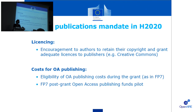Concerning licensing, the Commission encourages authors to retain their copyright and grant adequate licenses to publishers — for example, Creative Commons licenses. Concerning the costs for open access publishing, these costs are eligible during the grant, as in FP7.